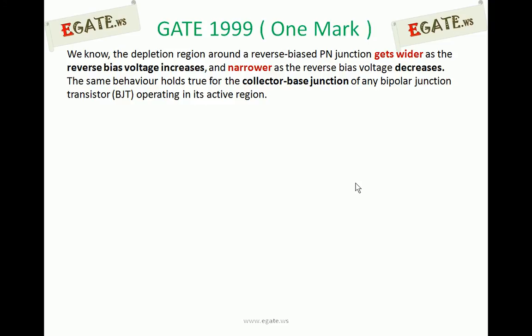For a simple PN junction, if it is under forward bias, the depletion layer width is very small. If it is under reverse bias, the depletion layer width is very large. Under reverse bias, if you increase the reverse voltage, the width gets wider and wider, and if you reduce the reverse bias voltage, it gets narrower.